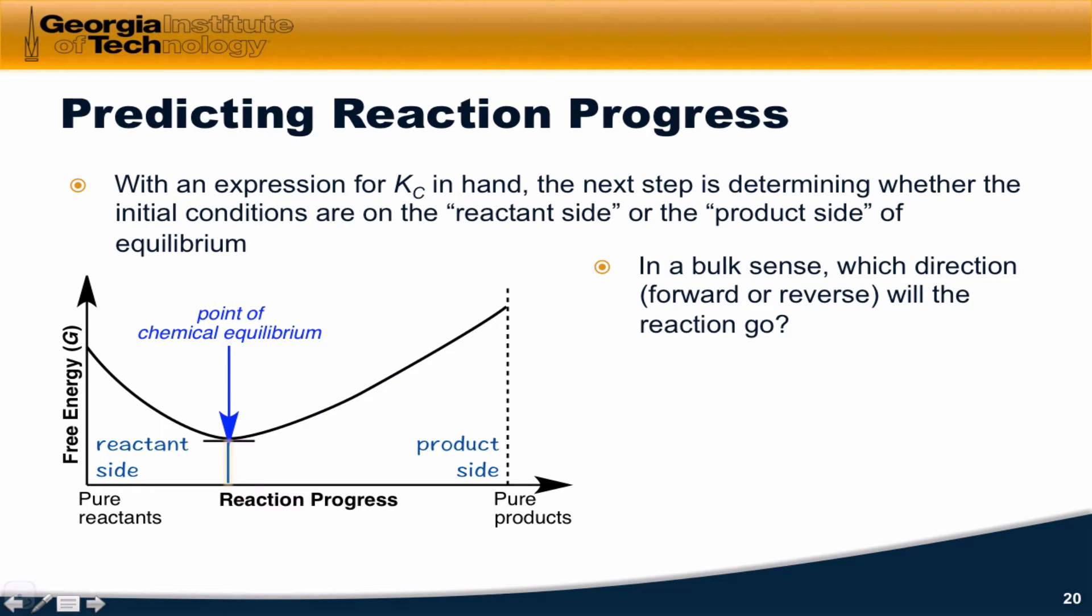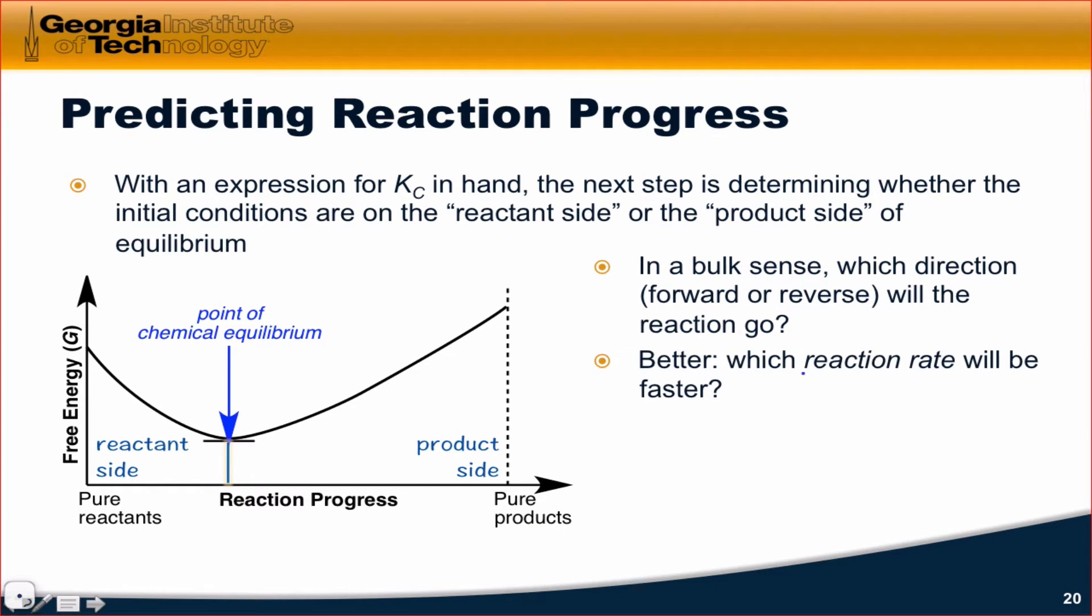So in a bulk sense, we want to know which direction will the reaction go. A better way to think about this, and one that brings in our microscopic picture from last time, is which reaction rate, forward or reverse, will be faster?